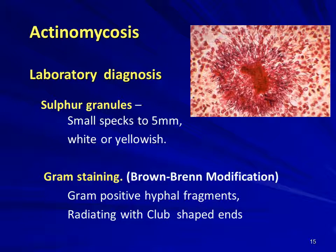By Gram staining or Brown and Brenn modification, you can see gram-positive hyphal filament structures in the center with radiating club-shaped ends. In the photograph, the central area shows violet-colored tiny hyphal fragments radiating to the periphery with necrosed material in the center, and club-shaped radiating structures at the extreme periphery due to the inflammatory process caused by bacterial invasion.